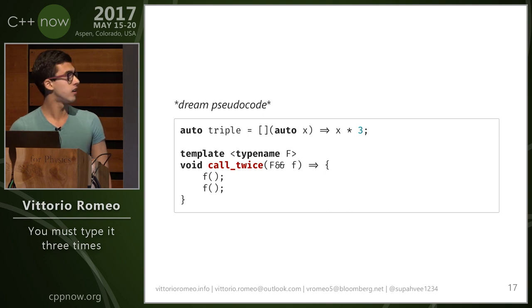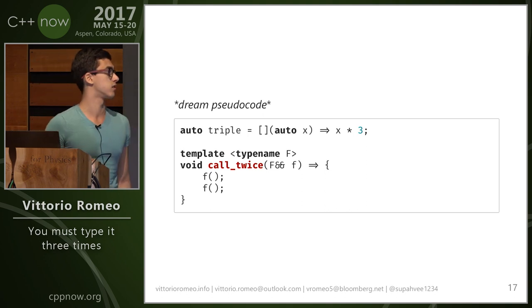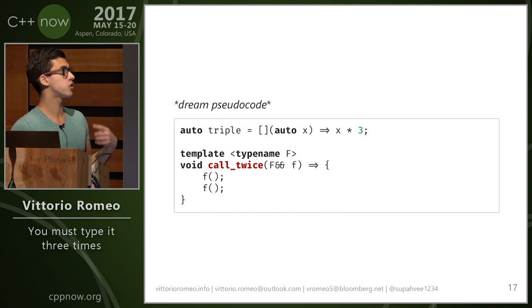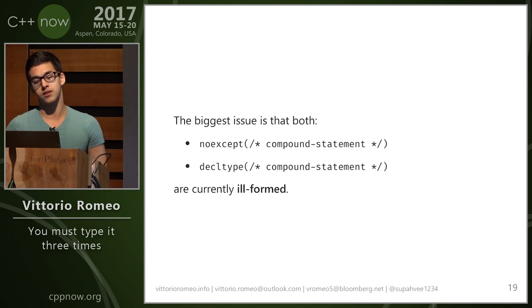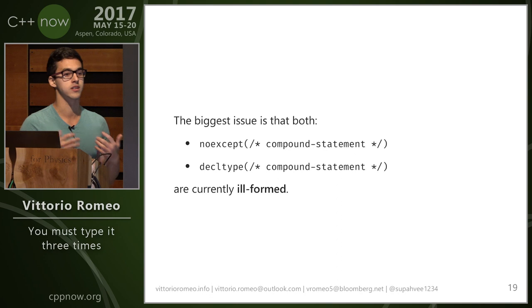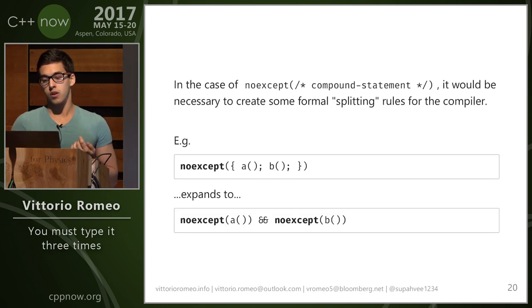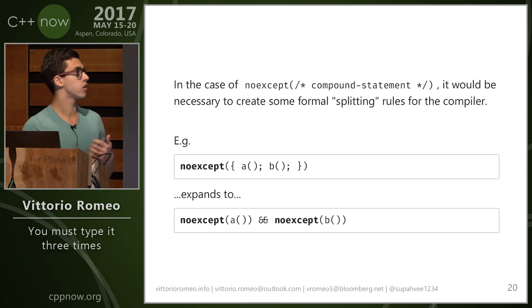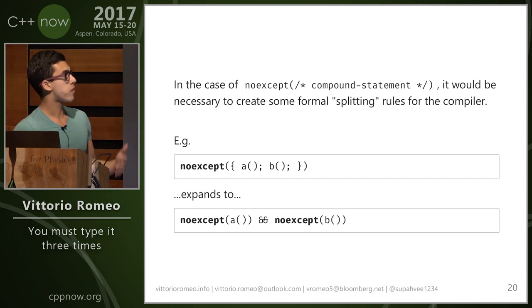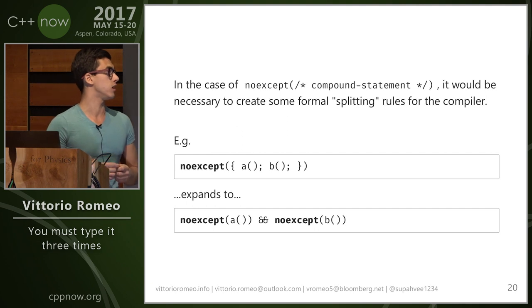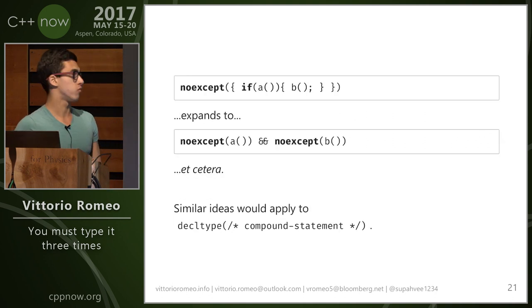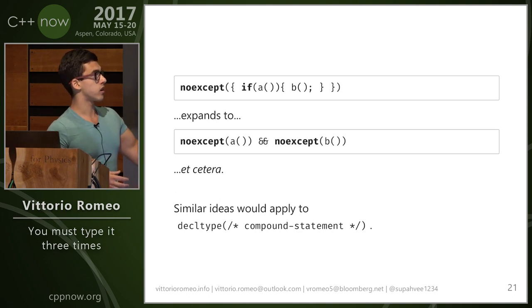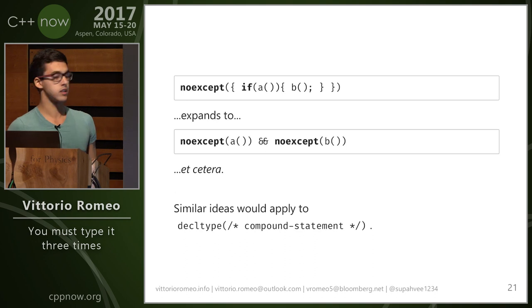This is what I want to write: a lambda like that, and a function where I can write the body once and it correctly generates the noexcept and decltype for me. The issue right now is that we cannot specify a compound statement inside noexcept or decltype — it's currently impossible. I was wondering if there is a way to specify some formal splitting rules for the compiler. For example, if we pass a compound statement made up of a call to A and a call to B, the compiler understands it and splits it into an AND between noexcept expressions. And if we have an if statement, we'd have a rule checking the predicate and the body. All of these ideas would apply to decltype as well.